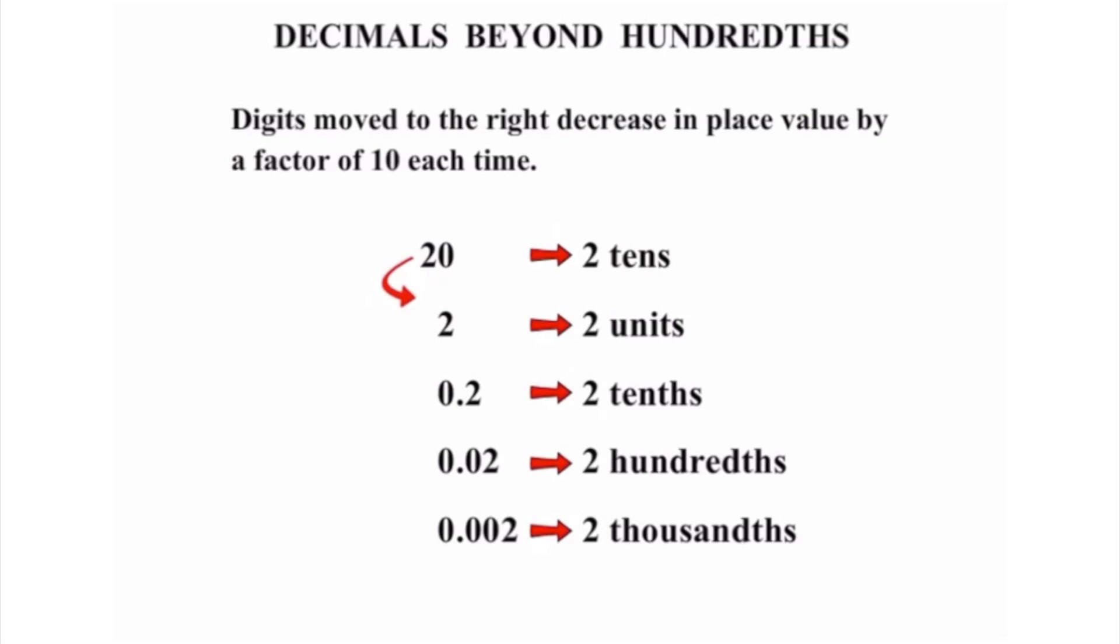So each time we moved, divide by 10. From 2 to 0.2, divide by 10, and that pattern continues each time. Even though that's all we've stopped at, it would continue forever.